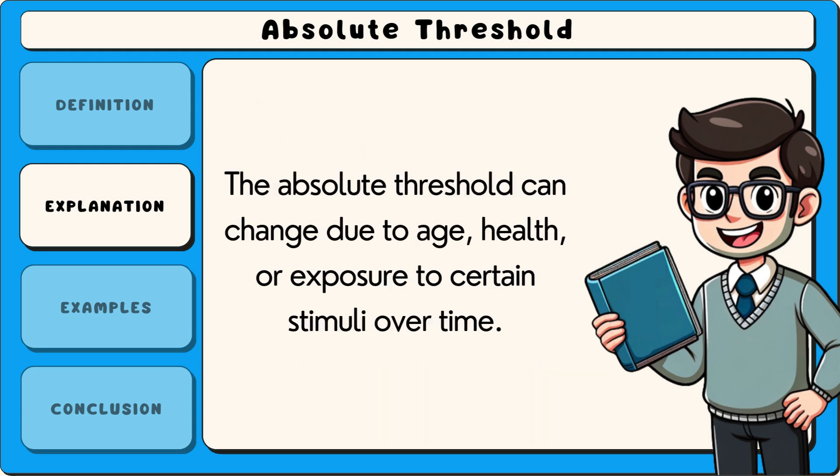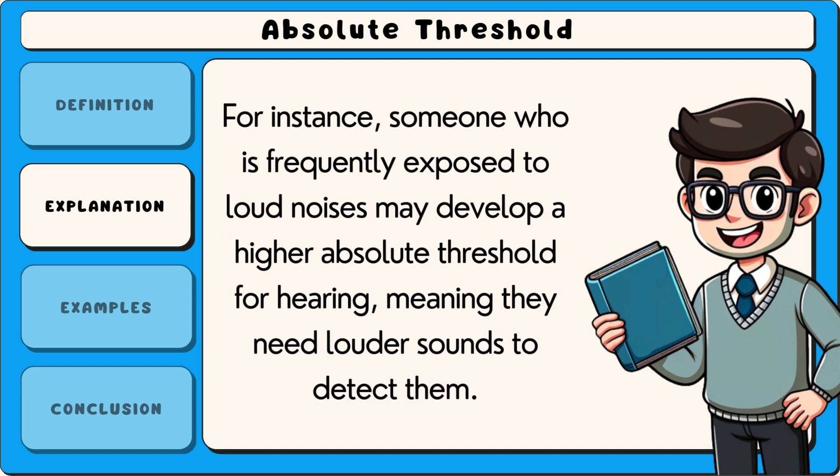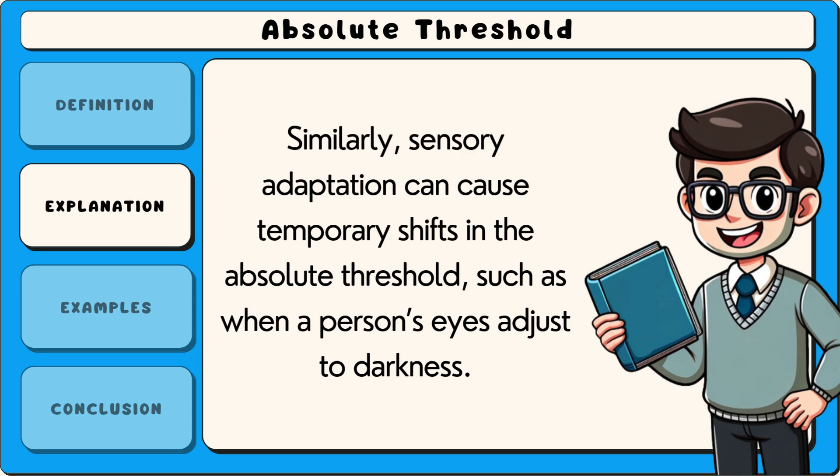The absolute threshold can change due to age, health, or exposure to certain stimuli over time. For instance, someone who is frequently exposed to loud noises may develop a higher absolute threshold for hearing, meaning they need louder sounds to detect them. Similarly, sensory adaptation can cause temporary shifts in the absolute threshold, such as when a person's eyes adjust to darkness.